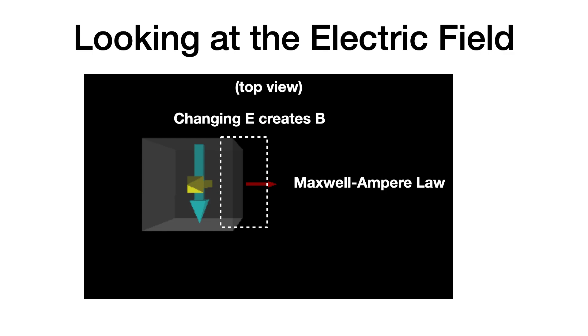Let's consider the electric field, the yellow arrow. If I look at this from the top, then I have this electric field moving into this rectangular area that doesn't exist, but I just picked it there anyway.